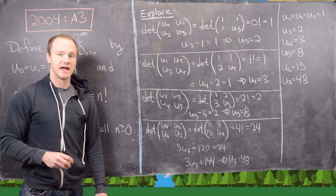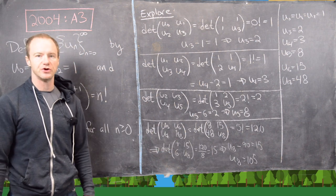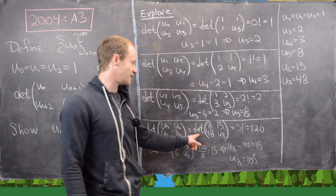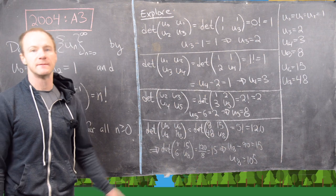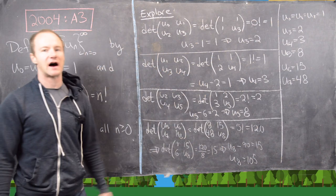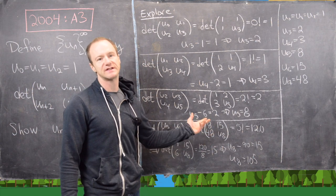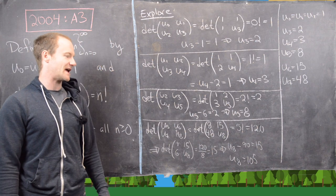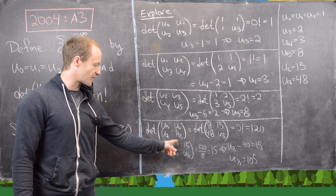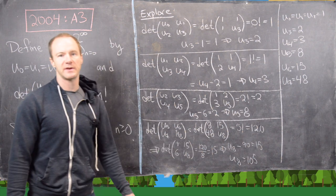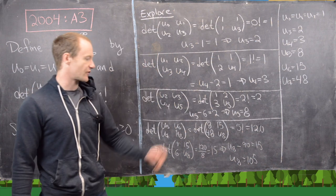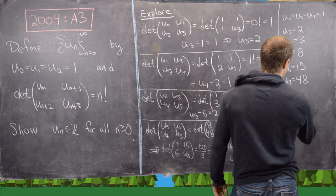Now let's do u_8. The determinant of [u_5, u_6; u_7, u_8] equals the determinant of [8, 15; 48, u_8], which we want to equal 5 factorial = 120. We can do a column operation: divide the first column by 8 and also divide the right-hand side by 8, giving 15. That gives u_8 − 90 = 15, so u_8 = 105.